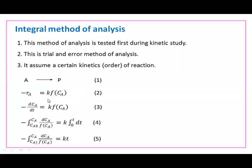Writing the general term as a function of C_A: if the reaction is zero order, then C_A^N with N=0 gives simply K. If it is first order, then it will be K·C_A. If it is second order, then it is K·C_A squared, and so on.